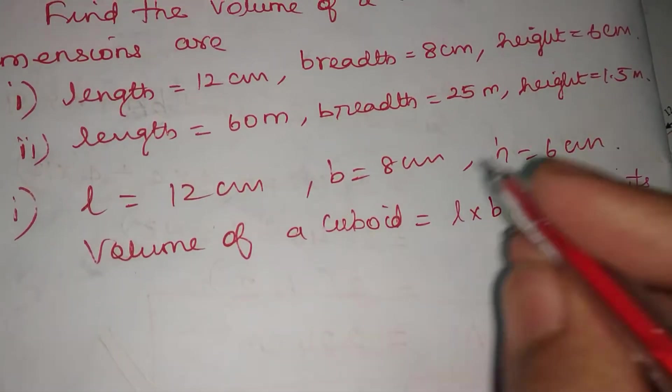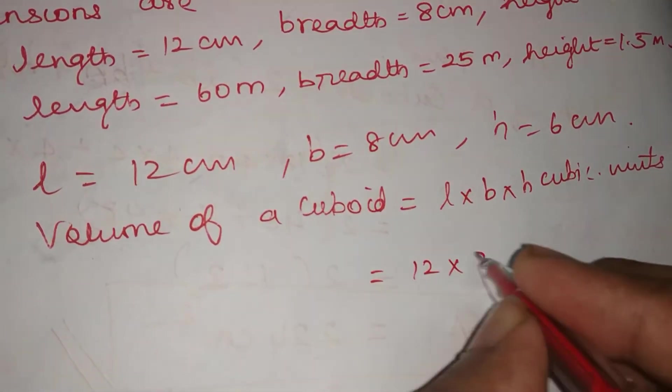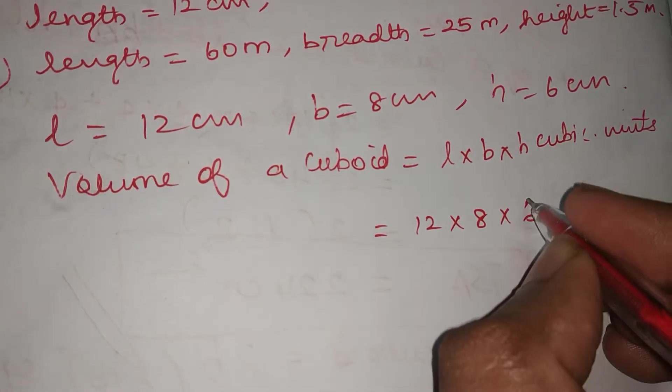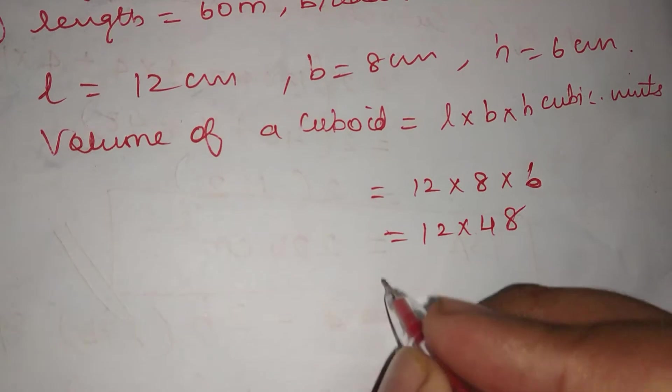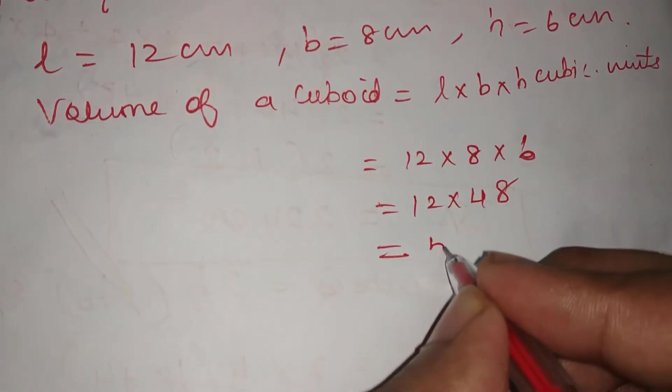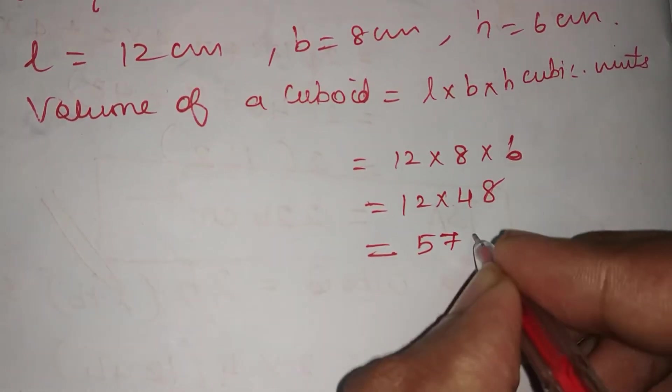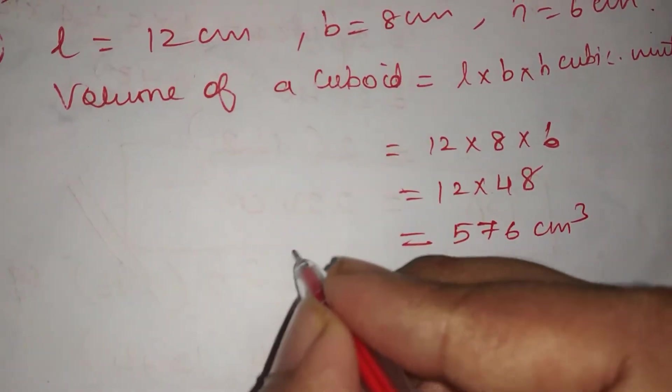So volume of a cuboid, substitute: 12 into 8 into 6. 8 times 6 is 48. So 12 into 48. Multiply 12 into 48, you will get 576 cm cubed.